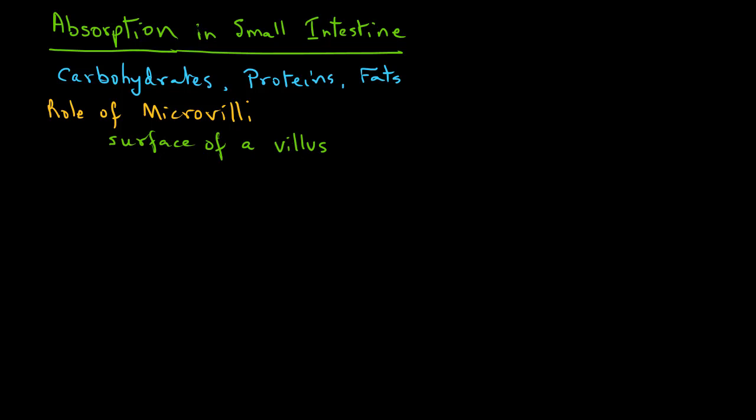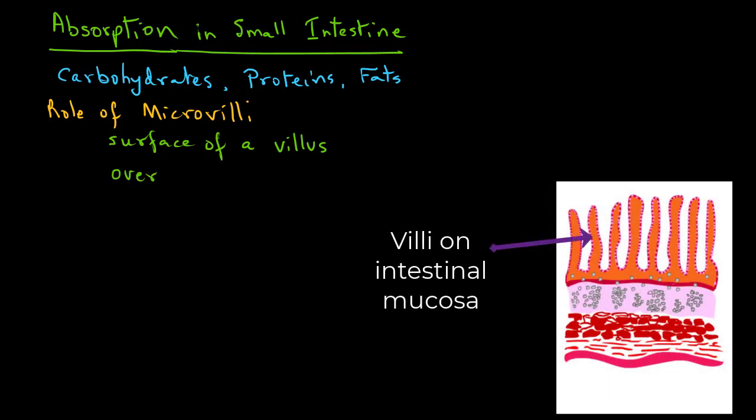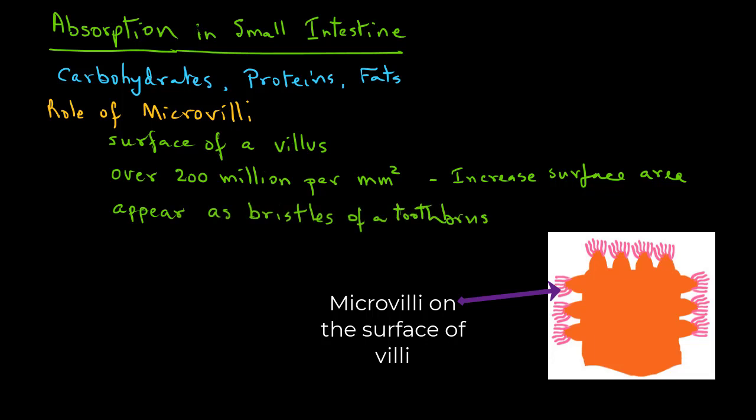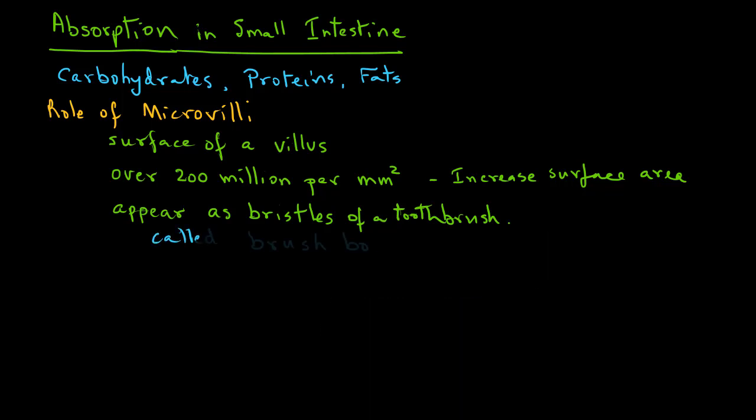You will recall from the video on the anatomy of the small intestine that there are over 200 million of these microvilli per millimeter square surface. In other words, these microvilli offer a large surface area. As you can see in this image, they also appear as bristles of a toothbrush. In fact, the early anatomists called these collection of microvilli as brush border.